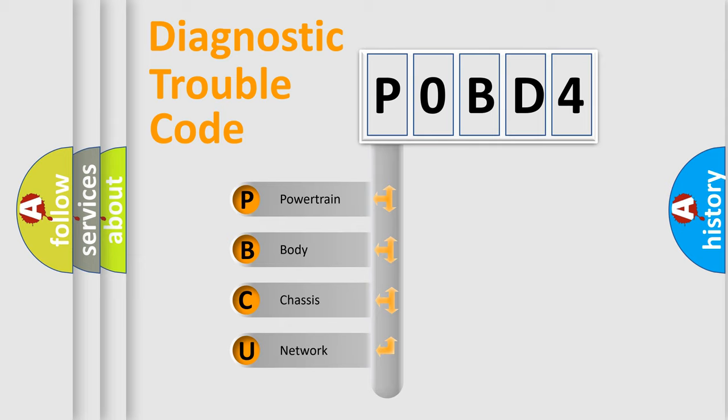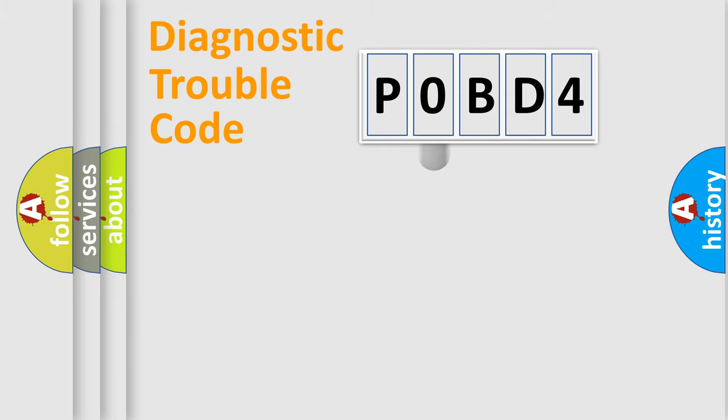We divide the electric system of automobile into four basic units: Powertrain, body, chassis, and network. This distribution is defined in the first character code.